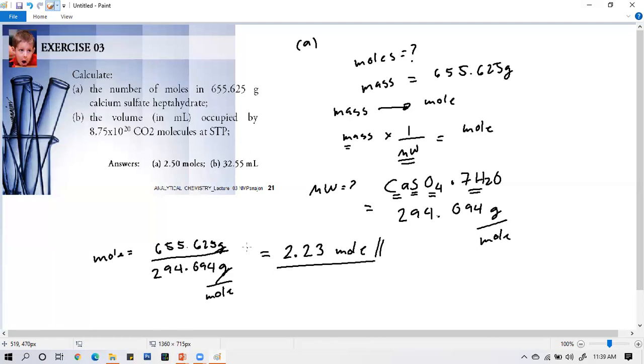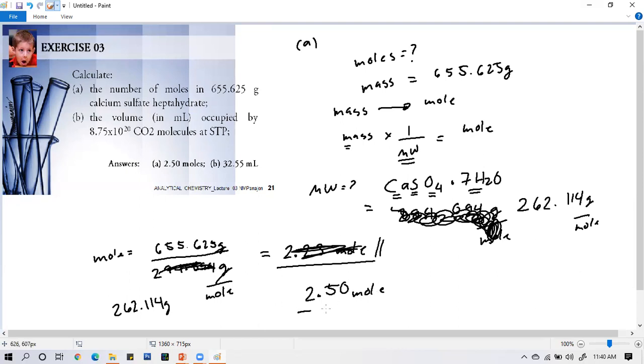Why did that happen? Because I was rounding. If you calculate 655.625 over 40 plus 32 plus 16 times 4 plus 18 times 7, you get 2.5. I made a rounding error earlier. Using 40.078 plus 32.06 plus 15.999 times 4 plus 18 times 7 gives 262.114 grams per mole. Using that value, 655.625 divided by 262.114 equals 2.5 moles. I just made an input error earlier. That's the answer.